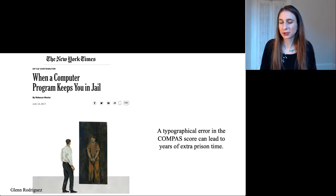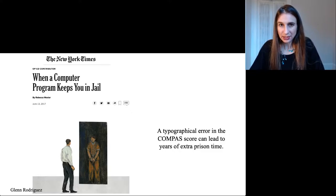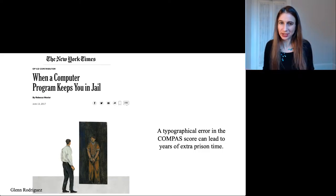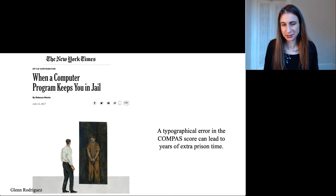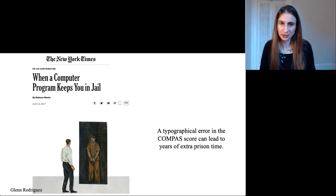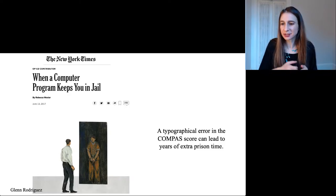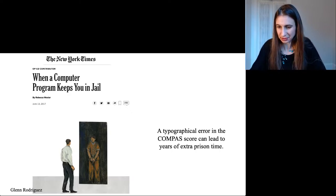COMPAS is a predictive model for recidivism that's used very widely across the United States. After Glenn's parole was denied, he realized there was a typographical error in one of his criminal history features in the COMPAS score calculation. This is a case where a typographical error literally led to years of prison sentence that wouldn't have happened if the error had been fixed.